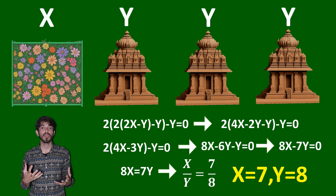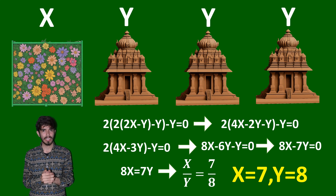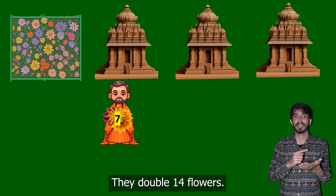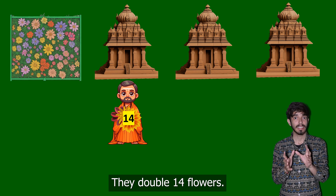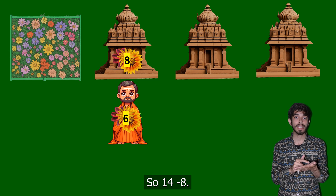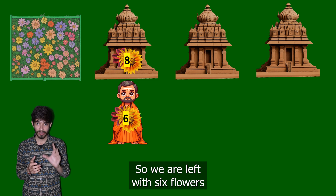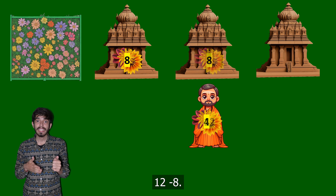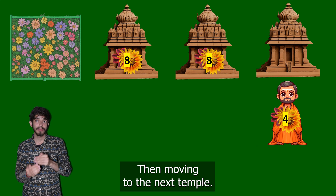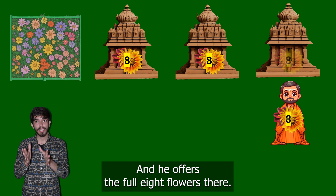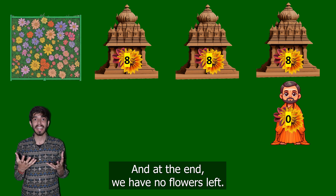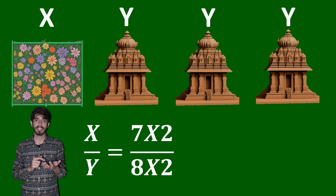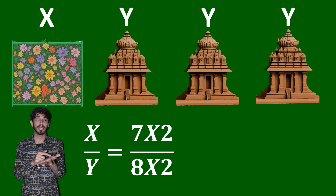Let's verify: 7 flowers from the garden double to 14, minus 8 offered leaves 6. Moving to the next temple: 6 doubles to 12, minus 8 leaves 4. Moving to the third temple: 4 doubles to 8, he offers all 8, and at the end we have no flowers left.